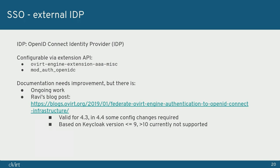The blog post was written for oVirt 4.3, and with oVirt 4.4 there were some significant changes introduced — specifically, the naming in the configuration is different, which I will show in the demo. Also, we officially support Keycloak as one of the identity providers, but up to version 9. There was a change in version 10 that has not yet been verified on our side.